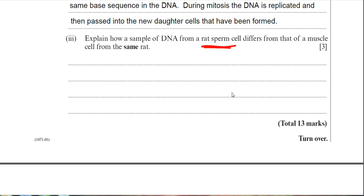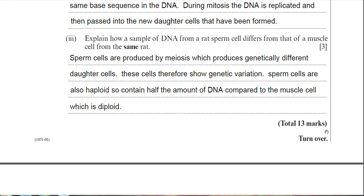Gametes are haploid cells, which means they have half the amount of DNA. My answer is: sperm cells are produced by meiosis, which produces genetically different daughter cells — these cells therefore show genetic variation. Sperm cells are also haploid, so they contain half the amount of DNA compared to the muscle cell, which is diploid. The key things here are: produced by meiosis, genetically different, and contain half the amount of DNA. That should get you three marks.